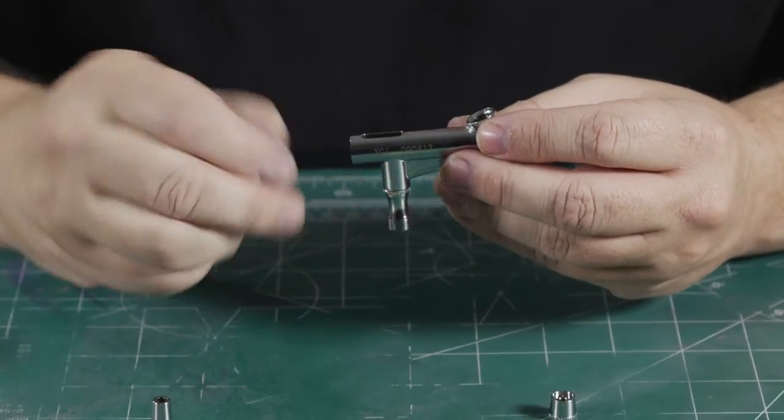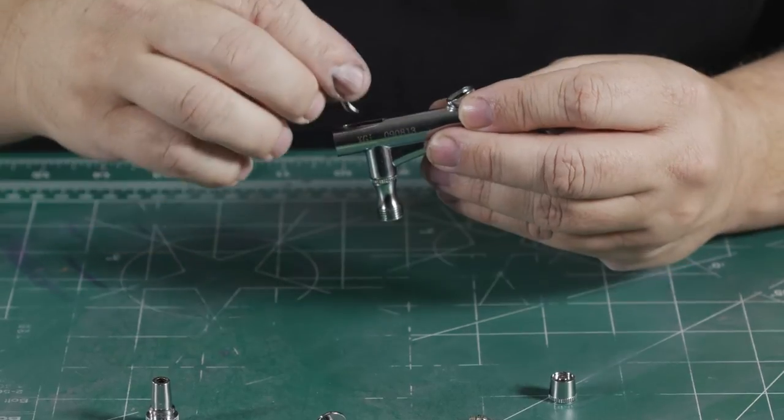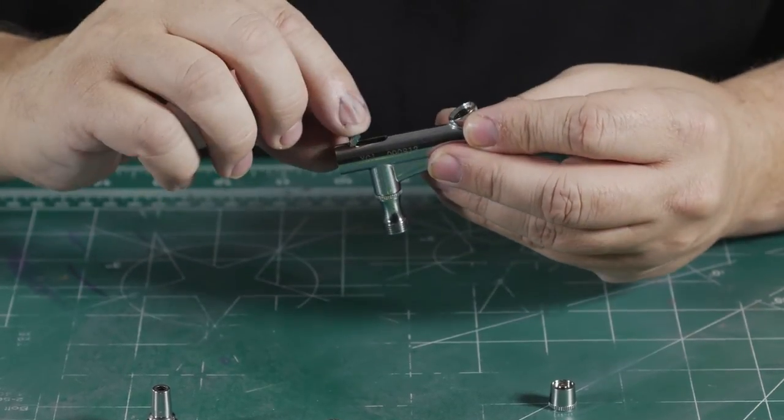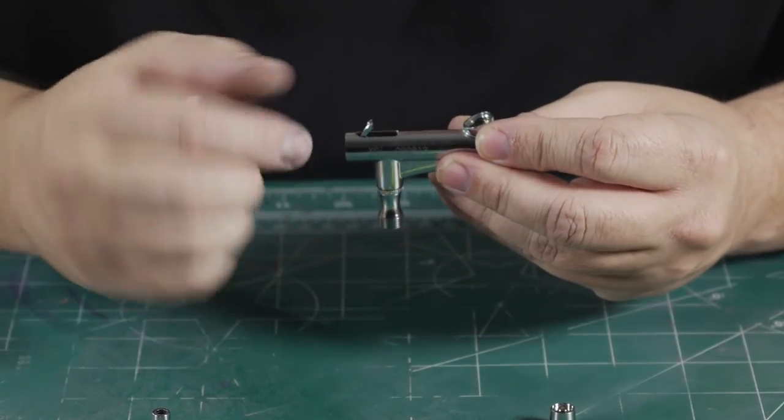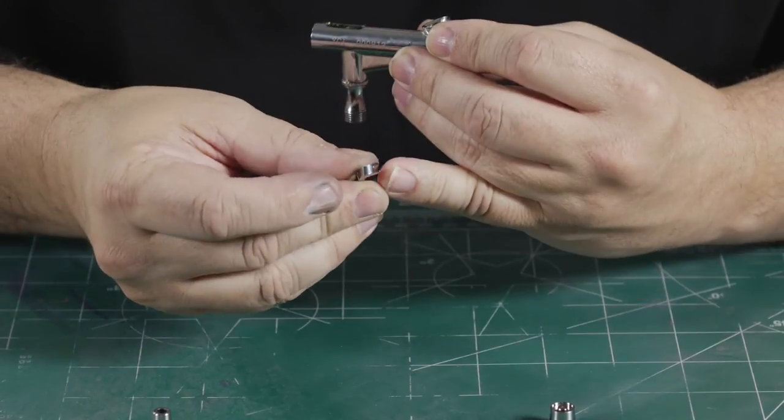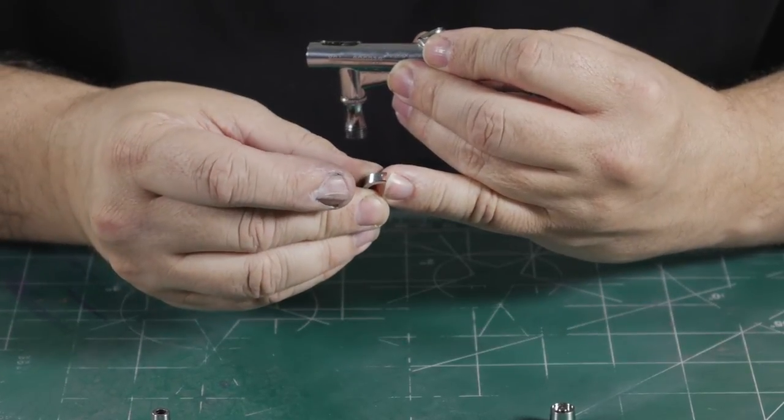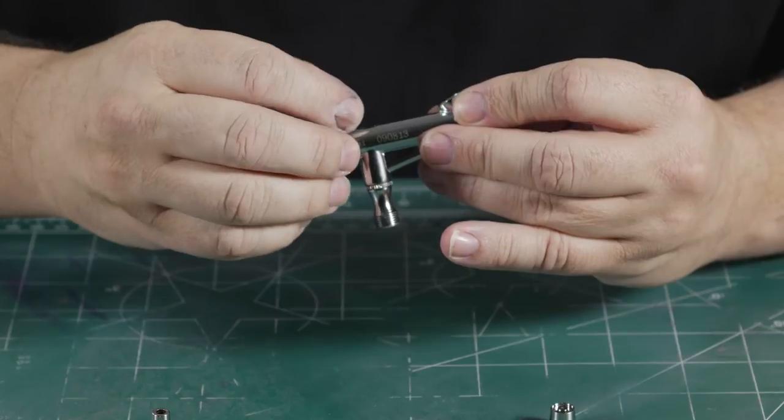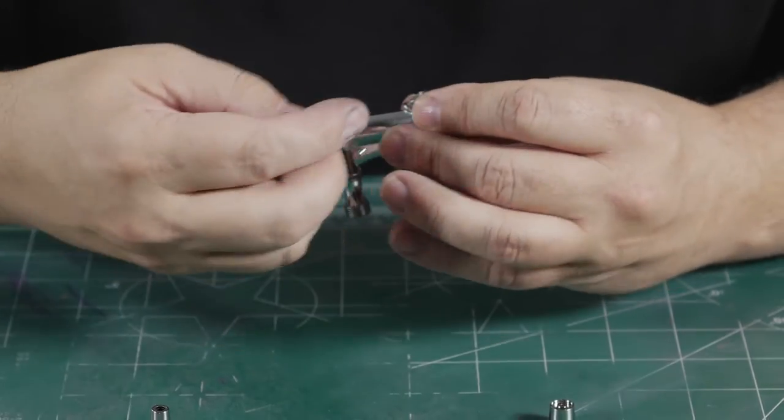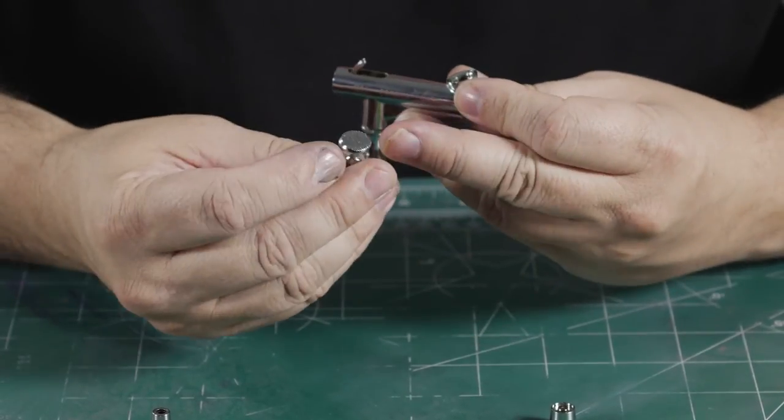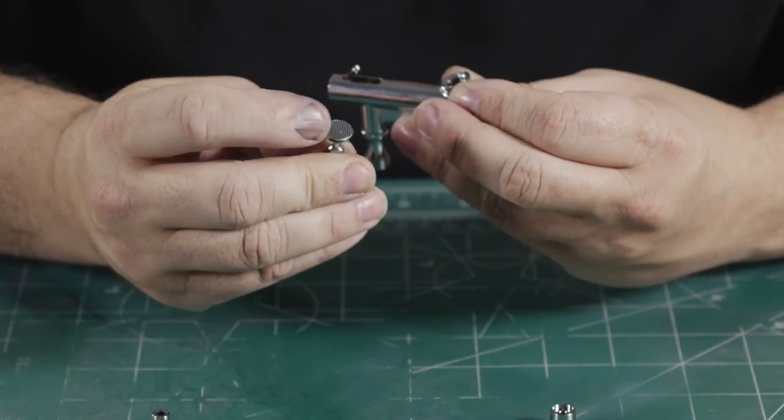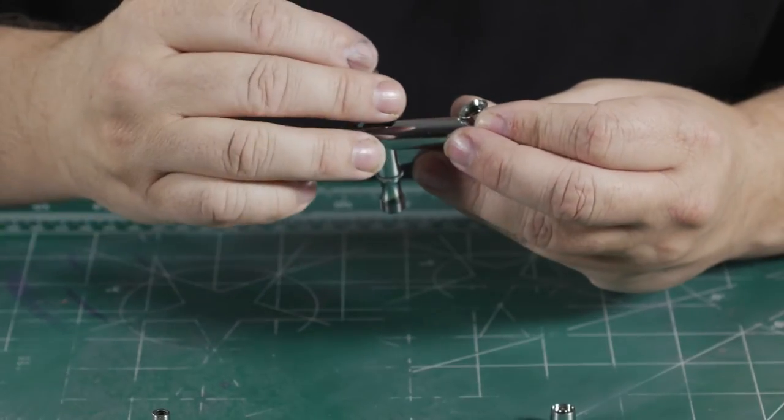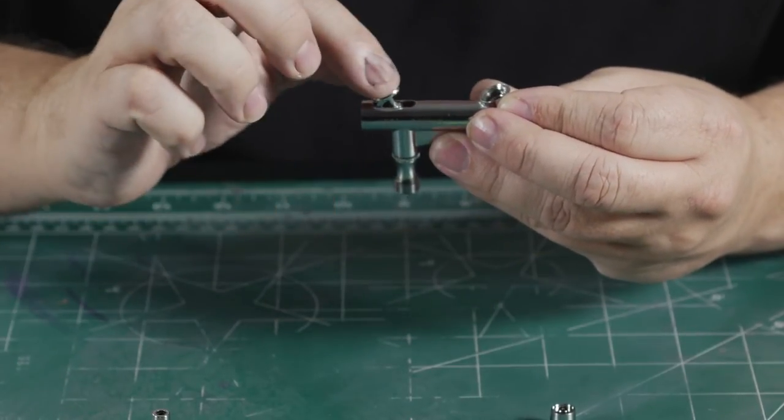Next we want to address the actuator. There's a flat inside of the airbrush that holds it into place. We also want to address that it has this curved shape here which interfaces with the trigger. Now with the trigger, to ensure that it goes in correctly, there's a high side here. We want that towards the back. And the trigger simply drops in.